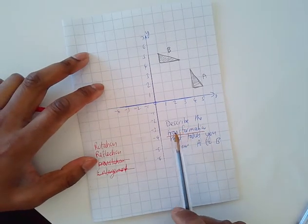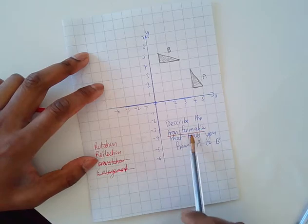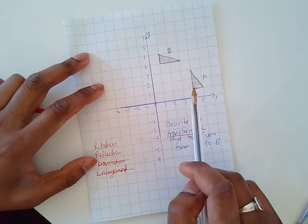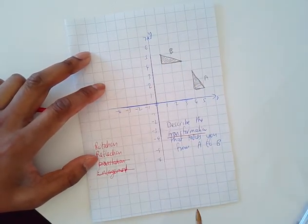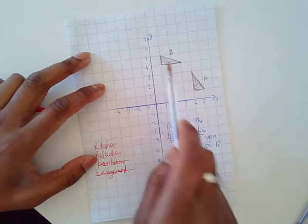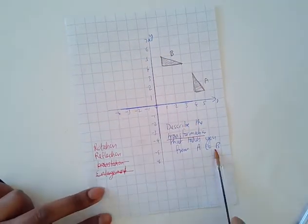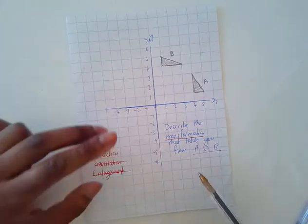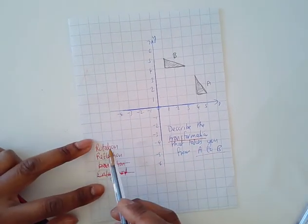Here I'm going to describe the type of transformation that takes you from A to B. How did I get from A to B? Careful, don't take it from B to A - it's going to be from A to B, that's what it says in the question. Transformation means four things: it could be rotation, reflection, translation, or enlargement.